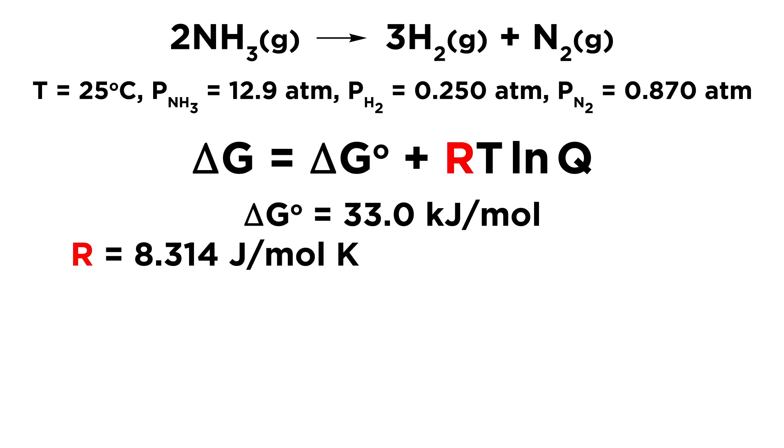Then for R, that's the gas constant, we are going to use the version of the gas constant that is 8.314 joules per mole K. And in particular, we are going to want to convert this into kilojoules per mole K because we need it to agree with the free energy change value. So that's in kilojoules per mole. So let's take this and divide by 1000. That gives us 0.008314 kilojoules per mole K.